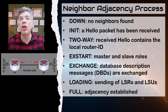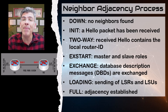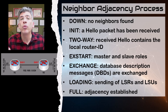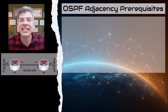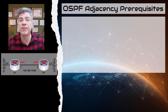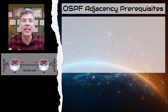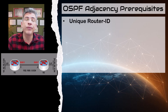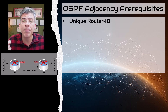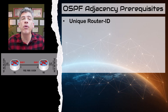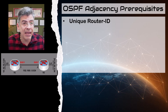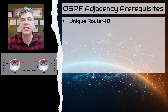Now if at any point along this exchange certain prerequisites are not met, the adjacency will not form. I will list some of the most important prerequisites for the establishment of OSPF adjacencies. First of all, in order for an adjacency to take place, there must be a unique router ID, as mentioned before. If two routers with the same router ID try to become neighbors, the adjacency will fail. Then the interfaces of both routers must also be in the same OSPF area. If they're in different areas, the adjacency will fail.